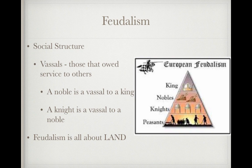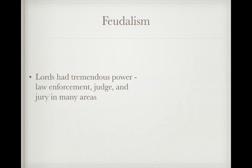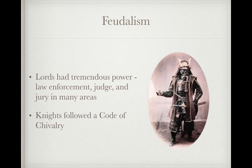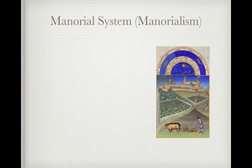Feudalism is fundamentally about land. Those who owned land controlled power. A king would give a fief — a grant of land — to lords in exchange for support. Lords held tremendous power within their manors, acting as law enforcement, judge, and jury. Knights followed a code of chivalry, which is very similar to Japan's code of Bushido.